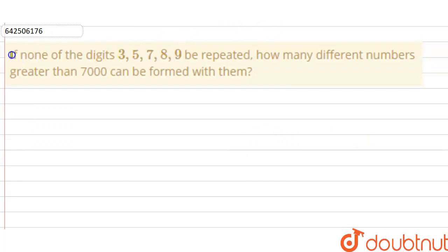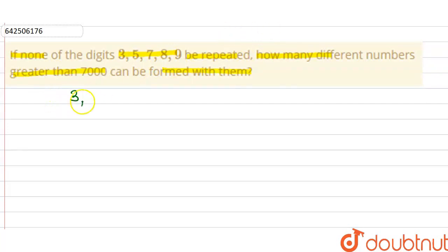Hello everyone. In this question, if none of the digits 3, 5, 7, 8, 9 be repeated — it means repetition is not allowed — then how many different numbers greater than 7000 can be formed with them? So using the digits 3, 5, 7, 8 and 9, how many numbers greater than 7000 can be formed?